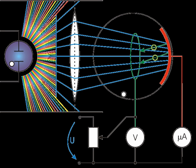In the photoemission process, if an electron within some material absorbs the energy of one photon and acquires more energy than the work function of the material, it is ejected.